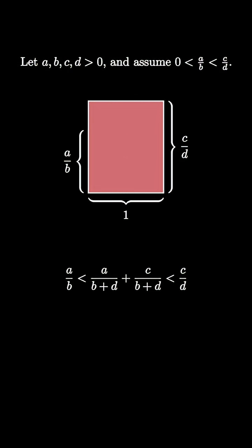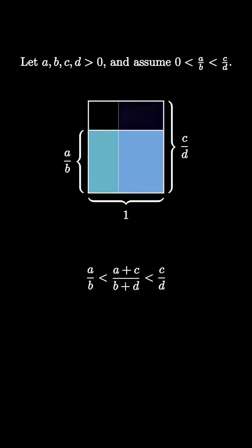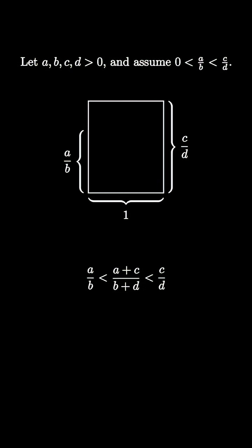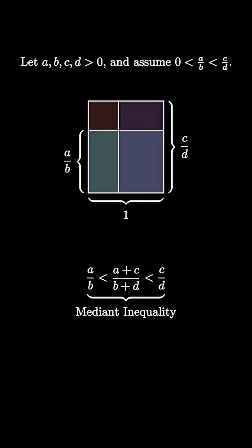The sum of A over B plus D and C over B plus D is equal to A plus C over B plus D. So we conclude that if A over B is less than C over D, then A over B is less than A plus C over B plus D, and this is less than C over D. This inequality is known as the mediant inequality.